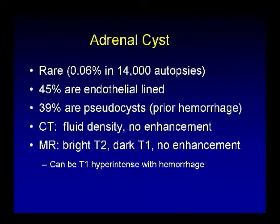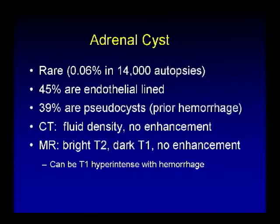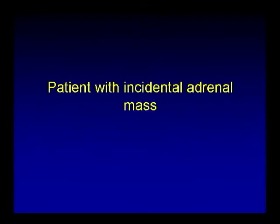MR T1 and T2-weighted imaging demonstrate a right adrenal mass that is hypointense on T1 and on T2 follows CSF signal — another case of adrenal cyst on MR. On CT, they are fluid density without enhancement. On MR they follow CSF signal but could be T1 hyperintense if there is internal hemorrhage.